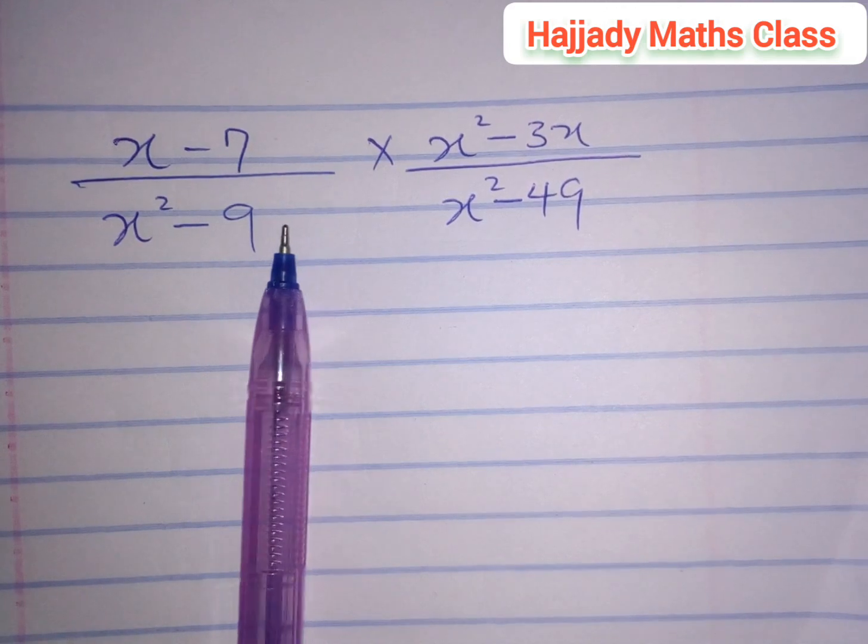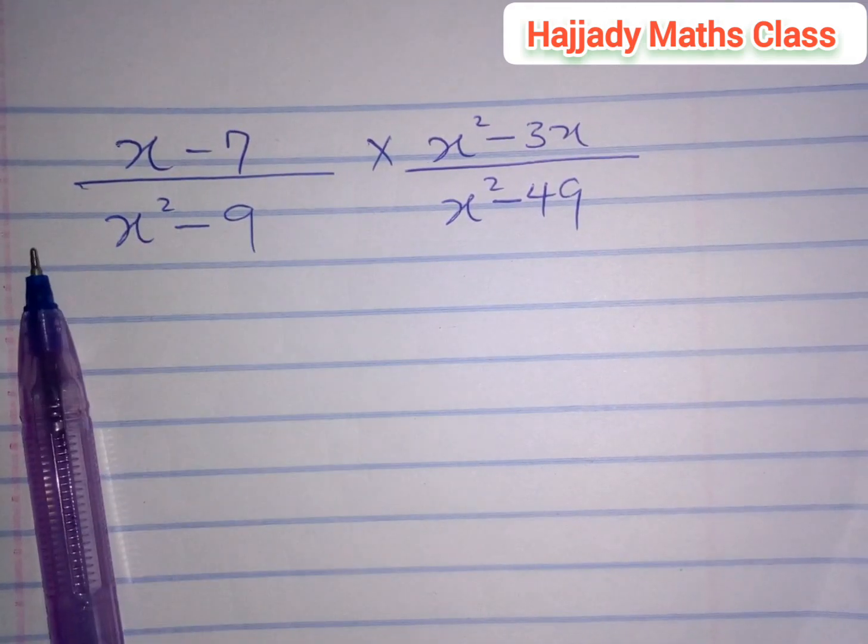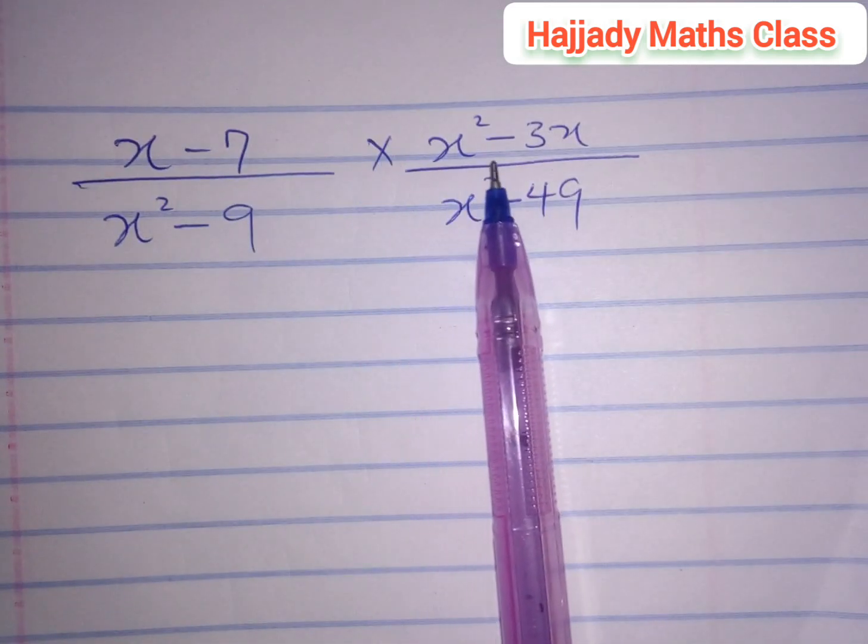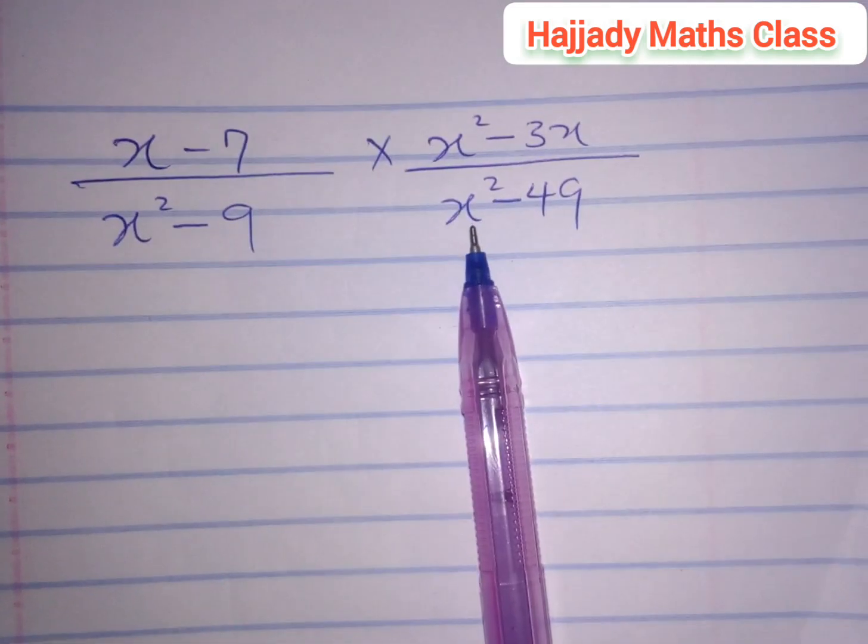Now looking at this, we are given (x - 7) divided by (x² - 9), multiplied by (x² - 3x) divided by (x² - 49).